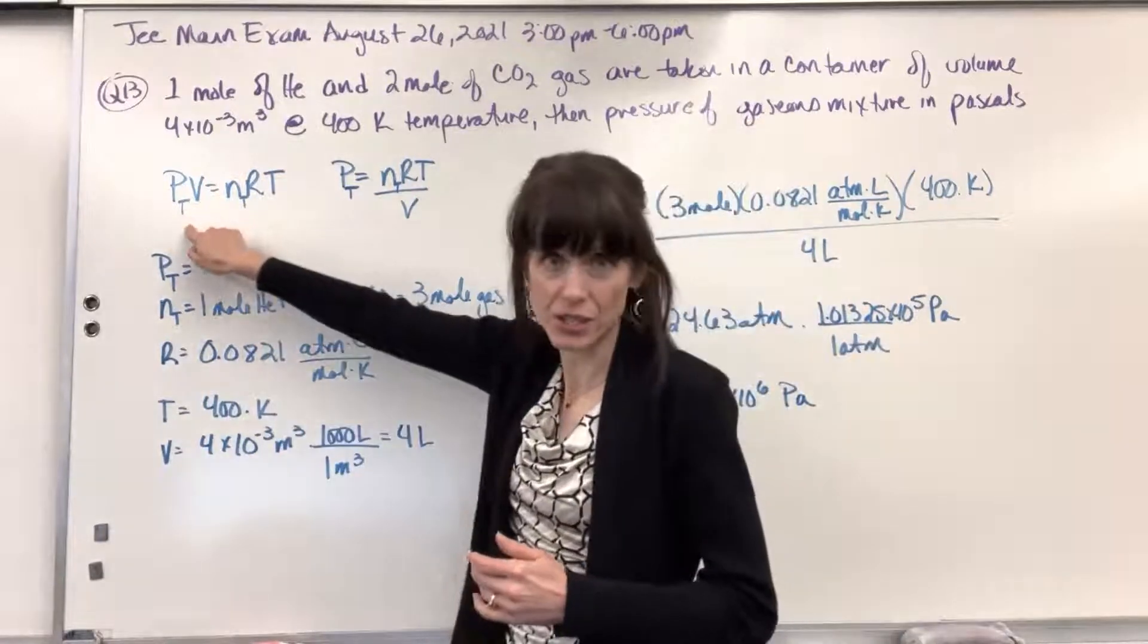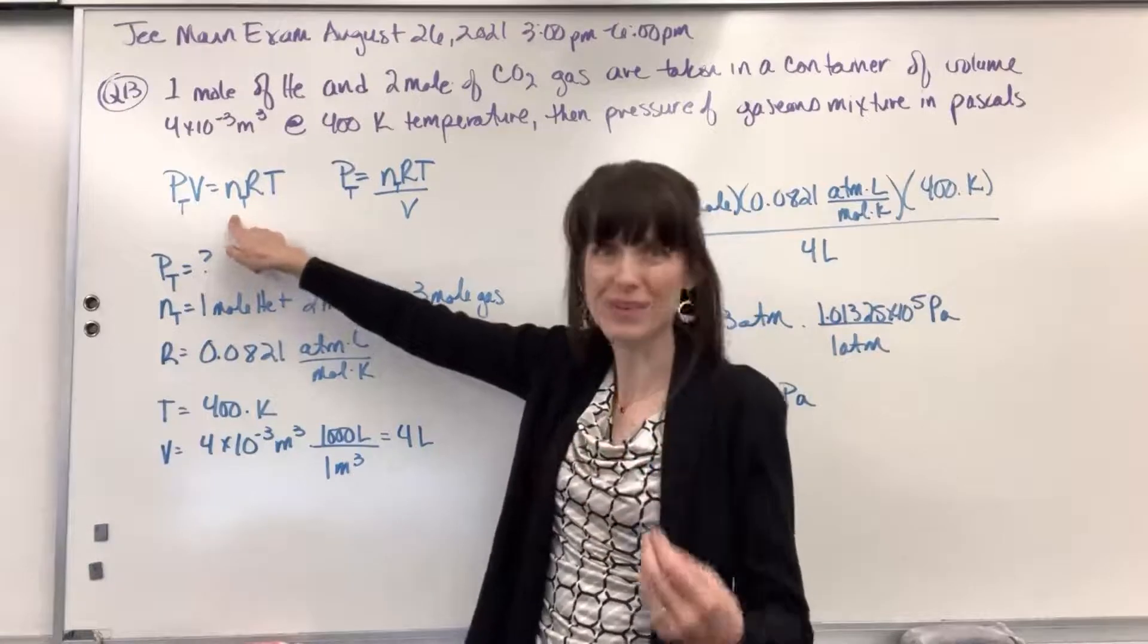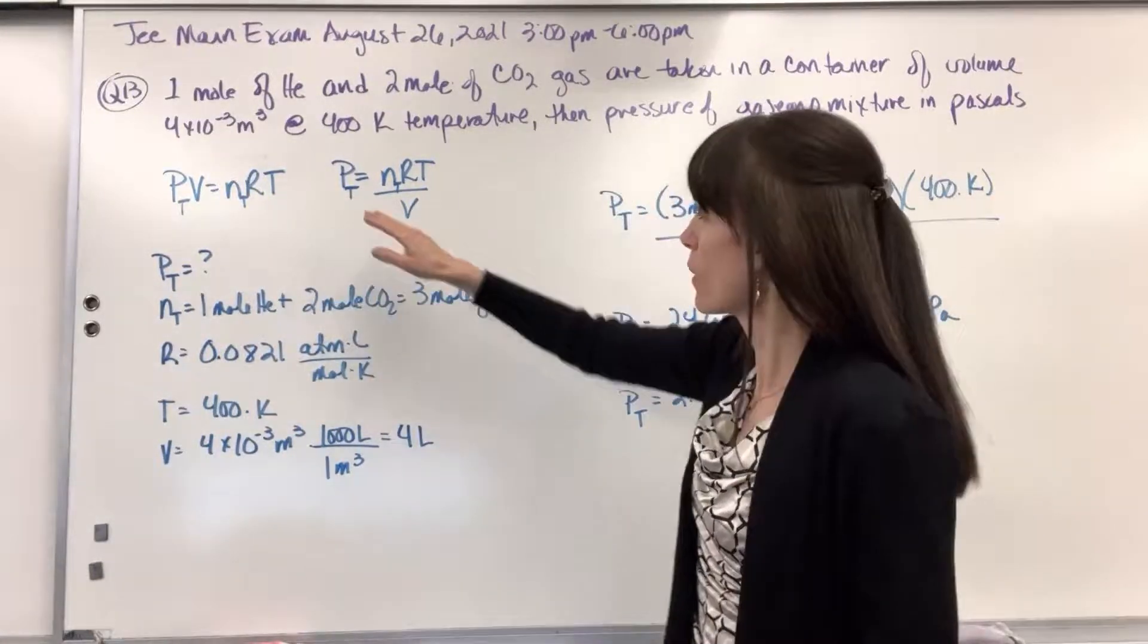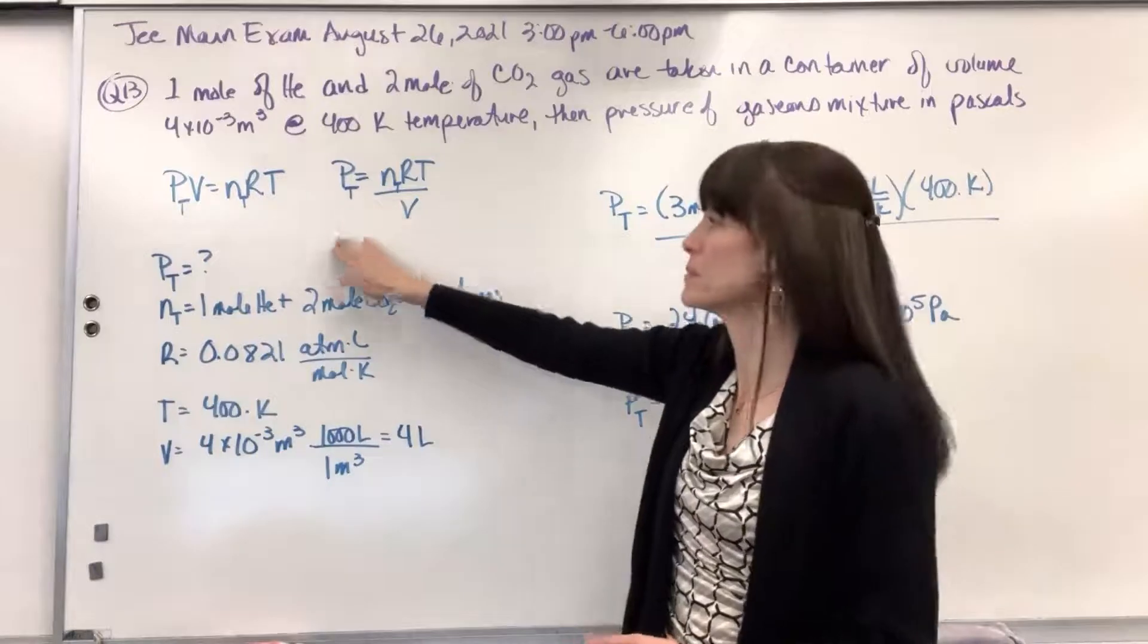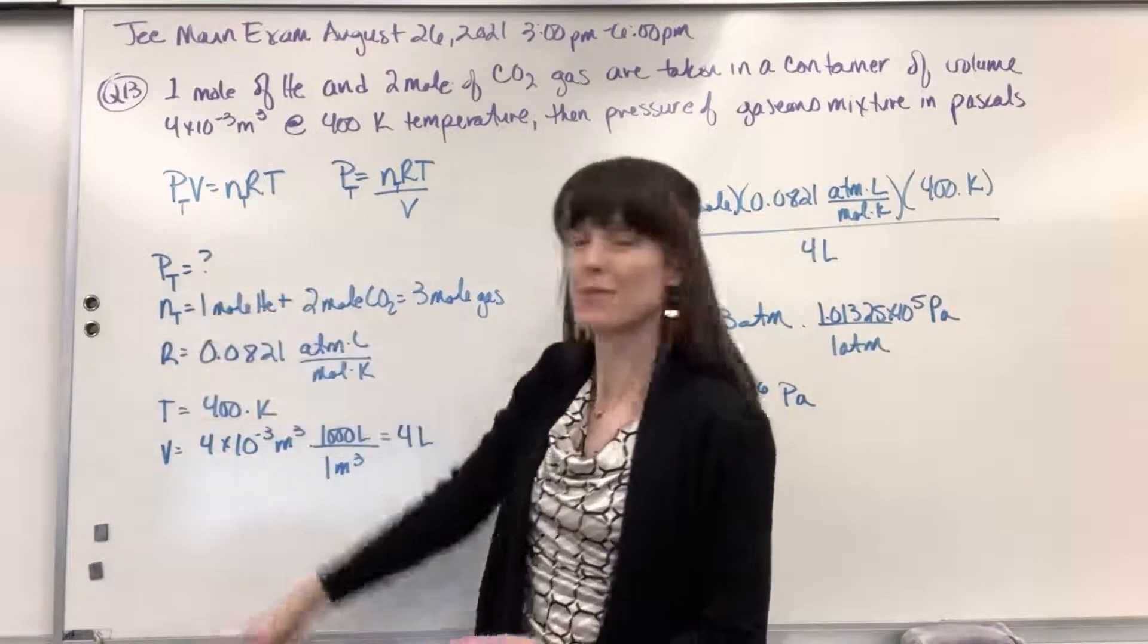So, total pressure times volume equals the total number of moles of gas times R times T. So, I solved for the total pressure, P sub T, and it's nRT divided by V, and then I labeled everything.